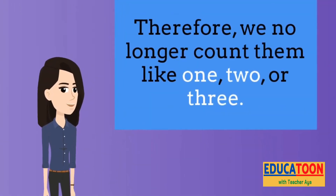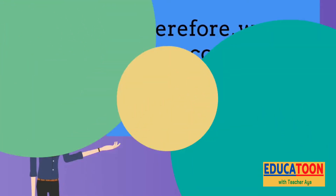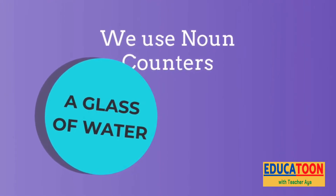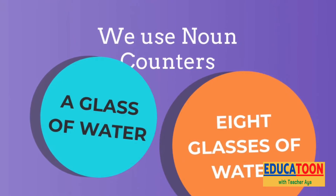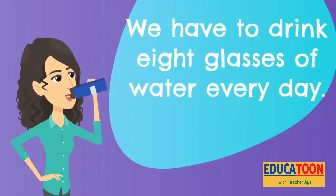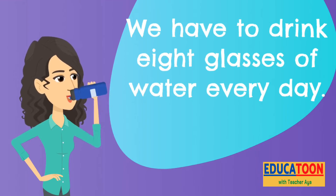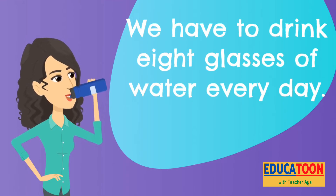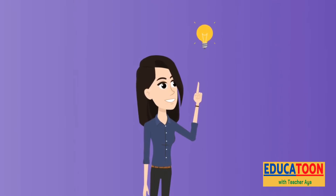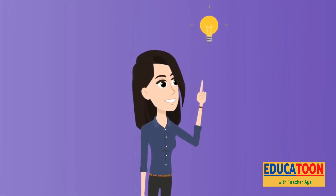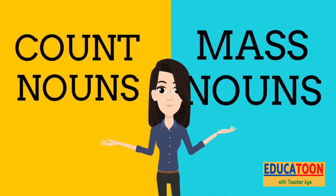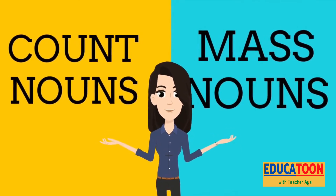These words — we no longer count them like one, two, or three. Instead, we use noun counters, like a glass of water or eight glasses of water. For example: we have to drink eight glasses of water every day. So notice, with mass nouns we don't write letter S at the end to make them plural — we use noun counters. Just remember: count nouns are those that can be counted; if not, then those are mass nouns.